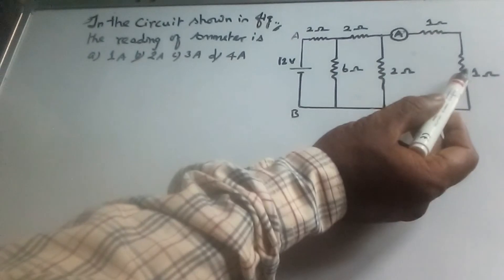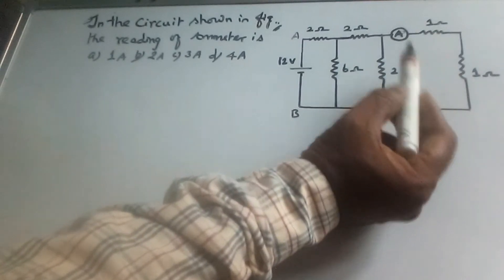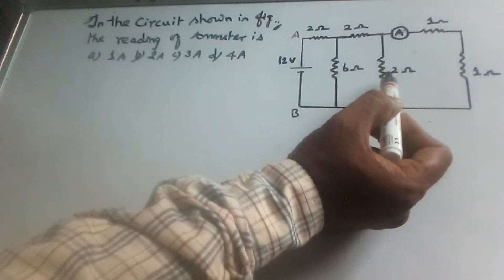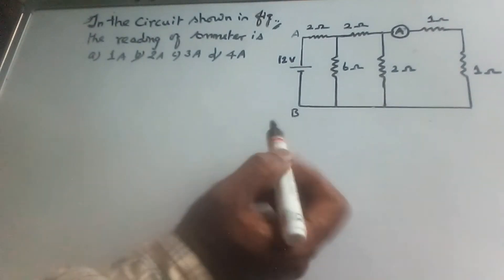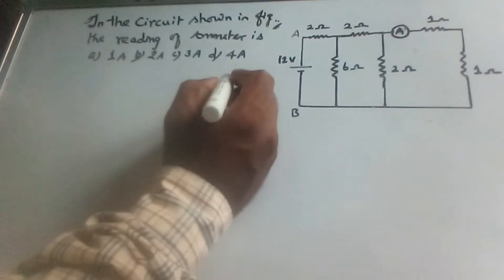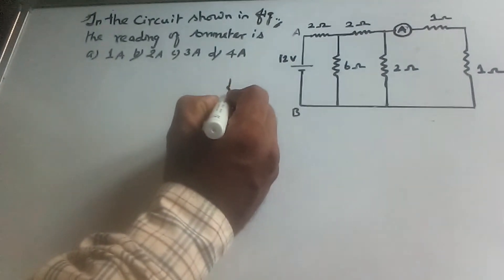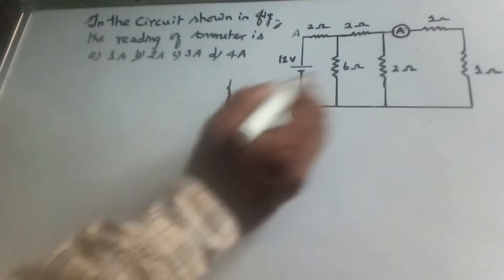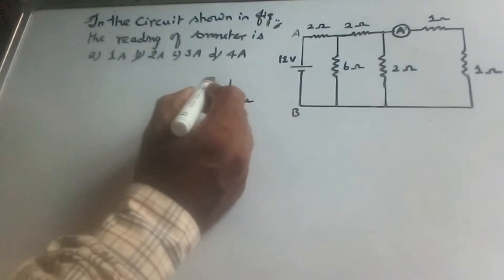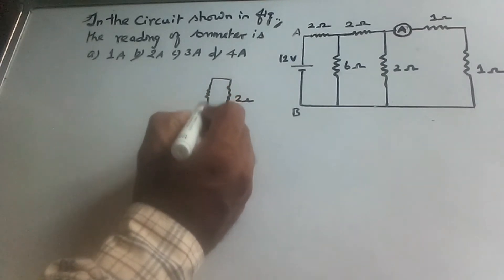These 1 ohm resistors are in series and these 2 ohm resistors are in series. Hence the equivalent resistance will be 1 plus 1 equal to 2 ohm, and 2 plus 2 equal to 4 ohm.